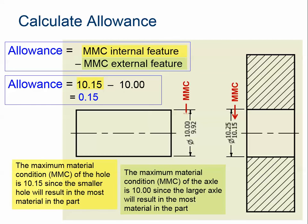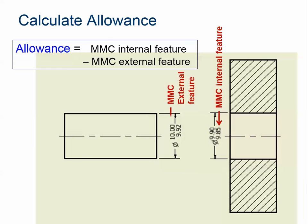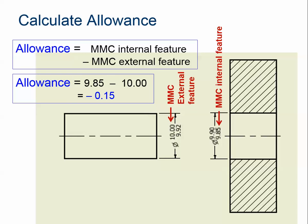Now let's look at the opposite case — a situation with potential interference. The same calculation still applies. The external feature's MMC is the upper limit; the internal MMC is the lower limit. We take the MMC of the internal feature, which is 9.85, and subtract the MMC of the external feature, which is 10.00. When we subtract those numbers, we get negative 0.15. A negative number indicates an interference. So that allowance calculation will take the guesswork out of it — if you use the MMC of the internal feature minus the MMC of the external feature, the sign of that number tells you whether you have clearance or interference.